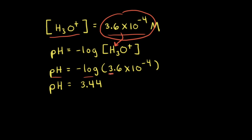Notice that we have two significant figures for the concentration. Therefore, we have two decimal places in our final answer. Plugging in the negative log of 3.6 times 10 to the negative fourth on your calculator gives you 3.44.